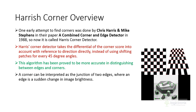Harris Corner was developed by Chris Harris and Mike Stephens in 1988. They combined the corner and detector algorithm to create the Harris Corner detector. Harris Corner provides accurate and distinguishing features between edges and corners. This corner algorithm can be interpreted as an edge junction — the junction of two edges — where first edge detection is proposed and then the junction is identified.